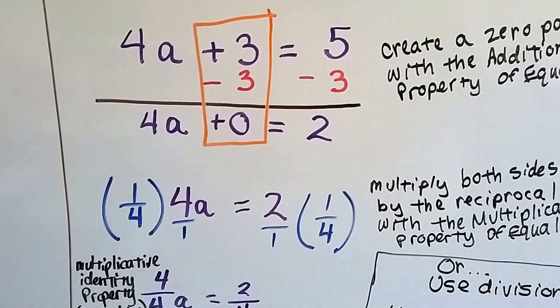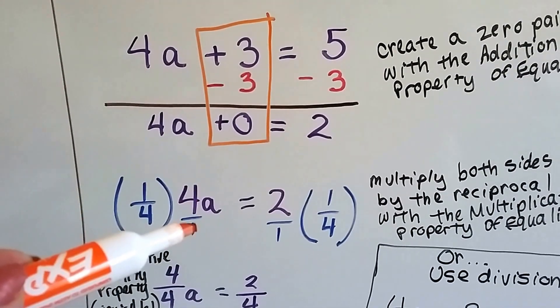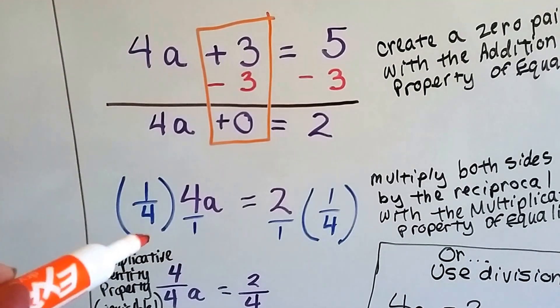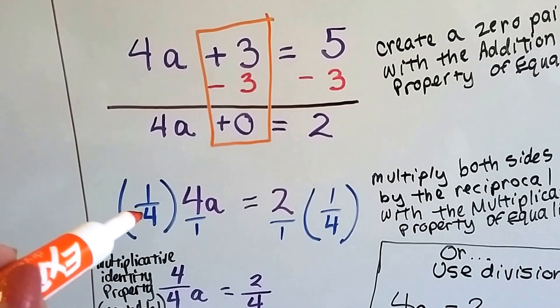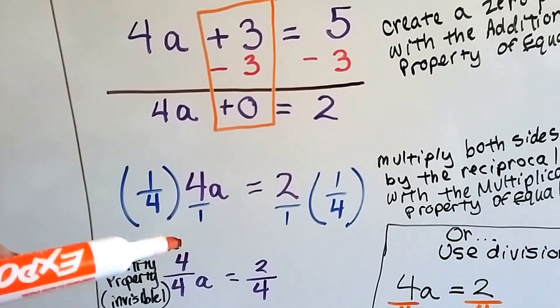What we're going to do is use the multiplication property of equality, and 4 can be written as a 4 over 1, so its inverse is one-fourth, when we flip around the numerator and denominator. Now we've got 1 times 4 over 4 times 1. That's 4 over 4.